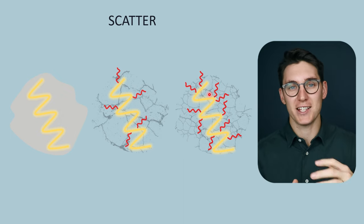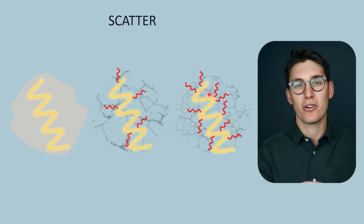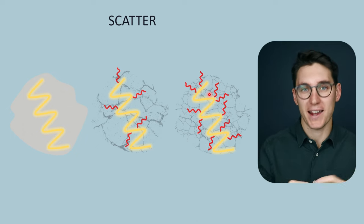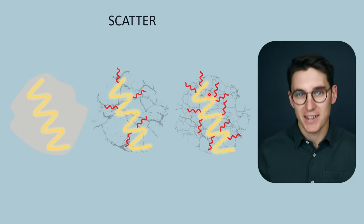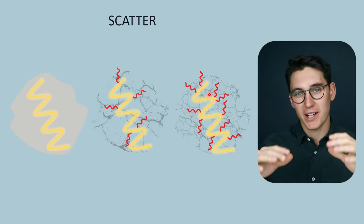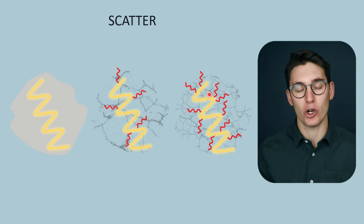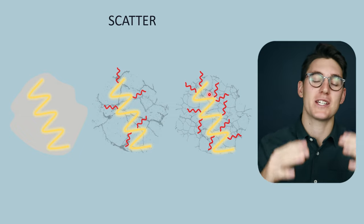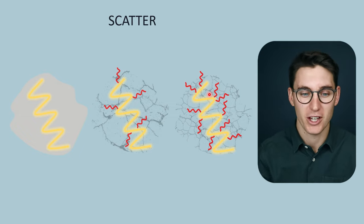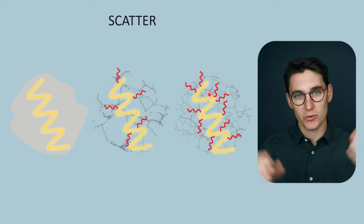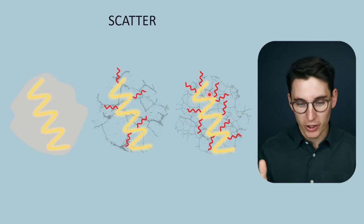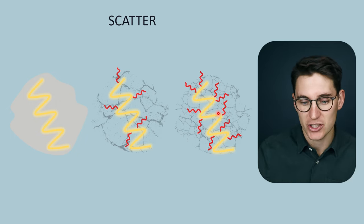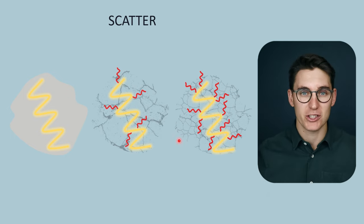The more scatter there is, we might call that hyperechoic — it has more echoes coming back than the baseline tissue. With less scatter involved, we call it hypoechoic, or even anechoic if there's no scatter, where we get no signal coming back. Scatter is one of the mechanisms for beam attenuation — we are losing some intensity as some of this energy is dissipated out into the tissues.